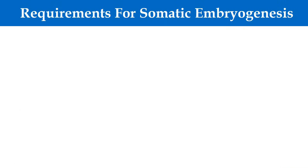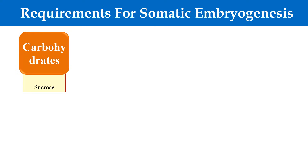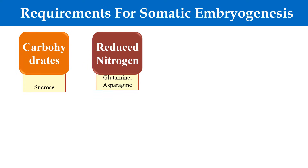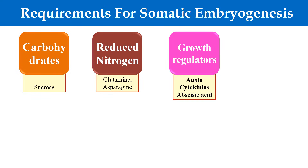Now, what are the requirements for somatic embryogenesis? First, it requires carbohydrate — the most commonly used is sucrose. Second, it also needs reduced nitrogen, which is provided in the form of amino acids like glutamine and asparagine. The next requirement is growth regulators. Generally we use auxin, cytokinin, and abscisic acid, which induce the formation of somatic embryo.